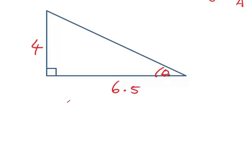We want to find the angle theta over here. In this case the side of length 4 is opposite theta, while the side of length 6.5 is the adjacent side. Therefore we must use tan theta, since that is always the length of the opposite side divided by the length of the adjacent side.